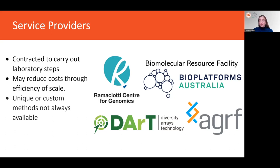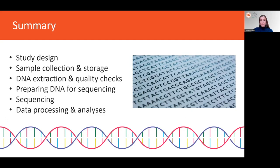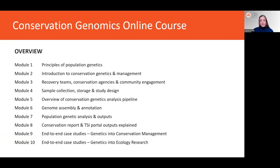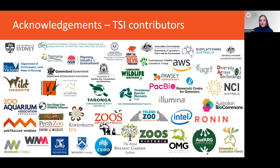These are the four biggest service providers in Australia, but there are others. Each will have a slightly different menu of services they offer and requirements they set for the samples that they will take. To summarize, the main steps in a conservation genomics project are: study design, sample collection and storage, DNA extraction and quality checks, preparing DNA for sequencing, actually sequencing, and data processing and analyses. I hope you found this module useful. For more details on many of these steps, other aspects of conservation genomics projects, and a number of end-to-end case studies, please check out the other modules in the open course. Thank you to all those parties who have contributed to and continue to contribute to TSI.